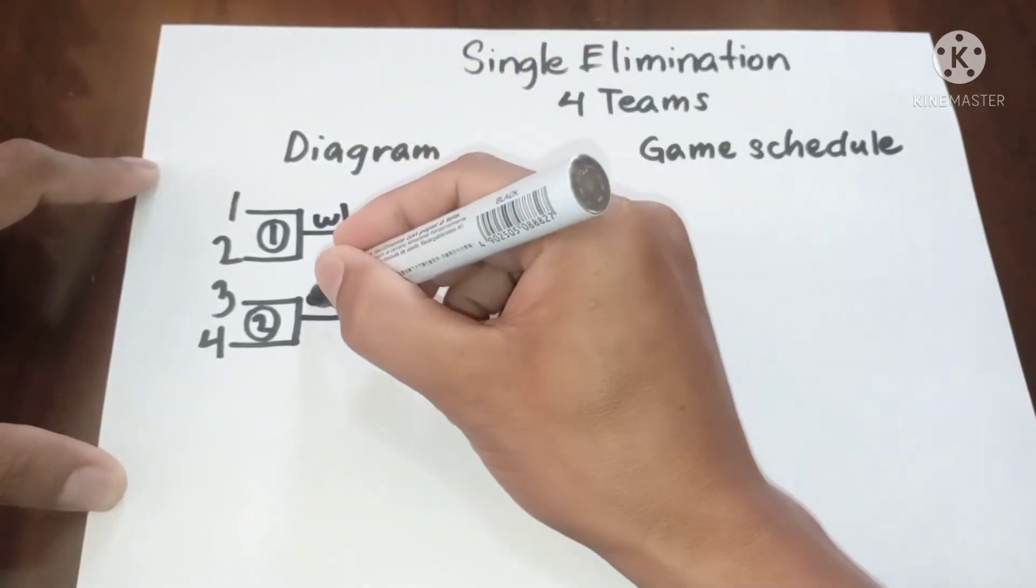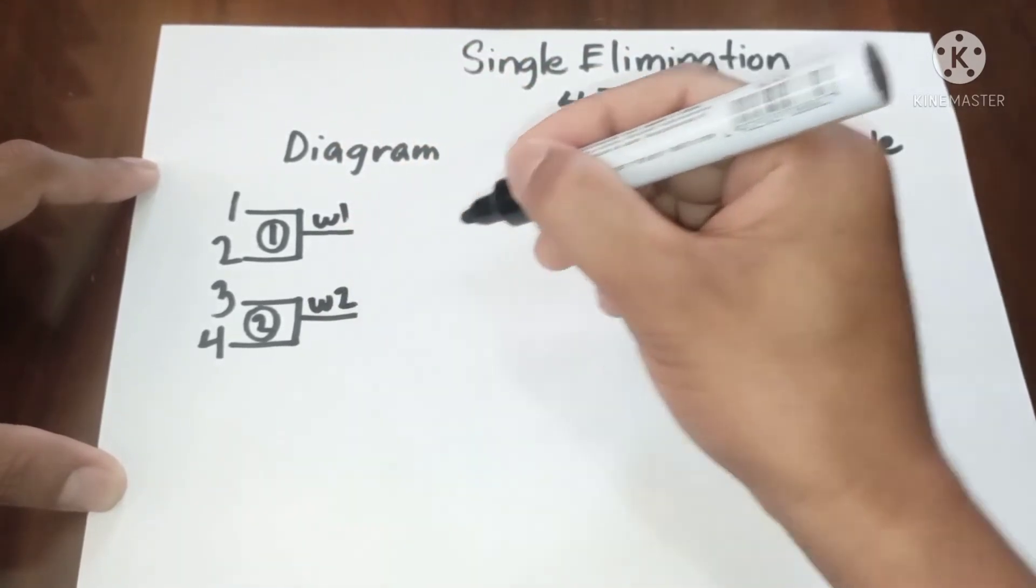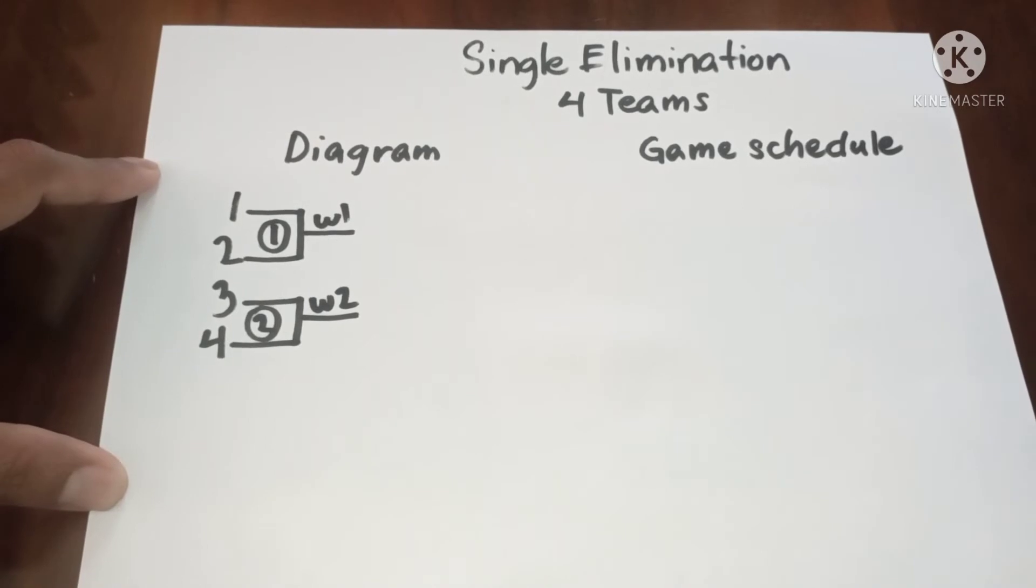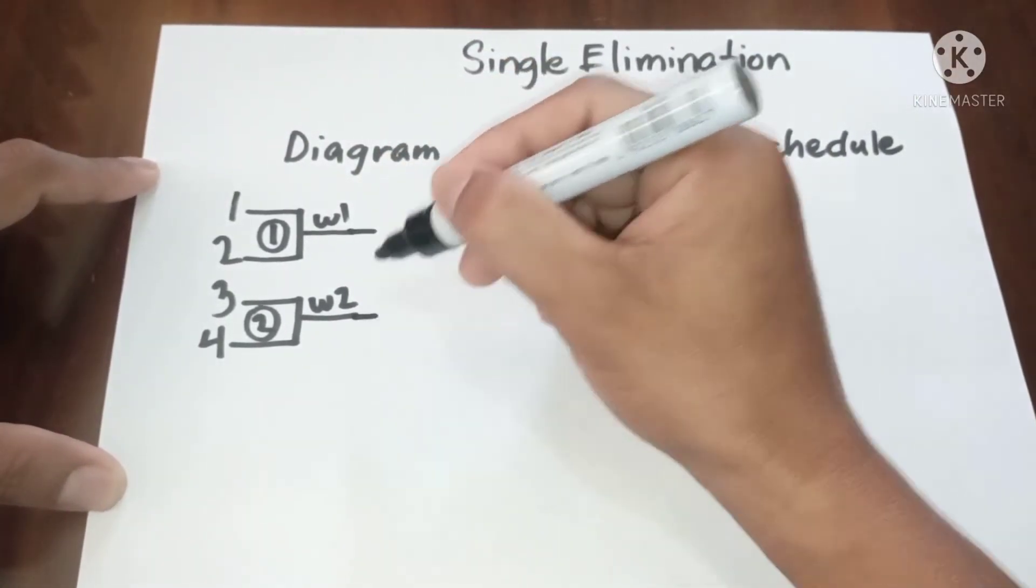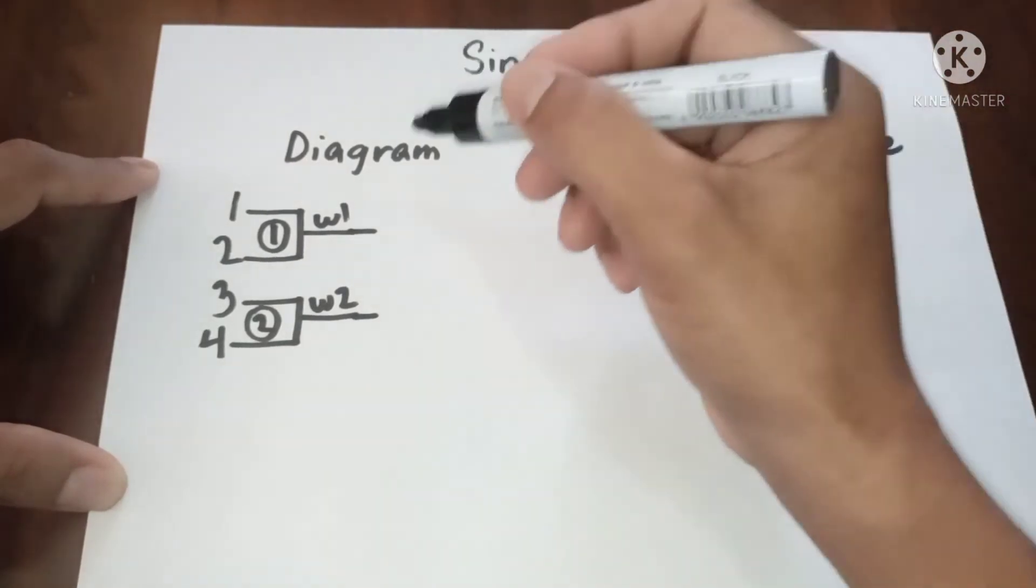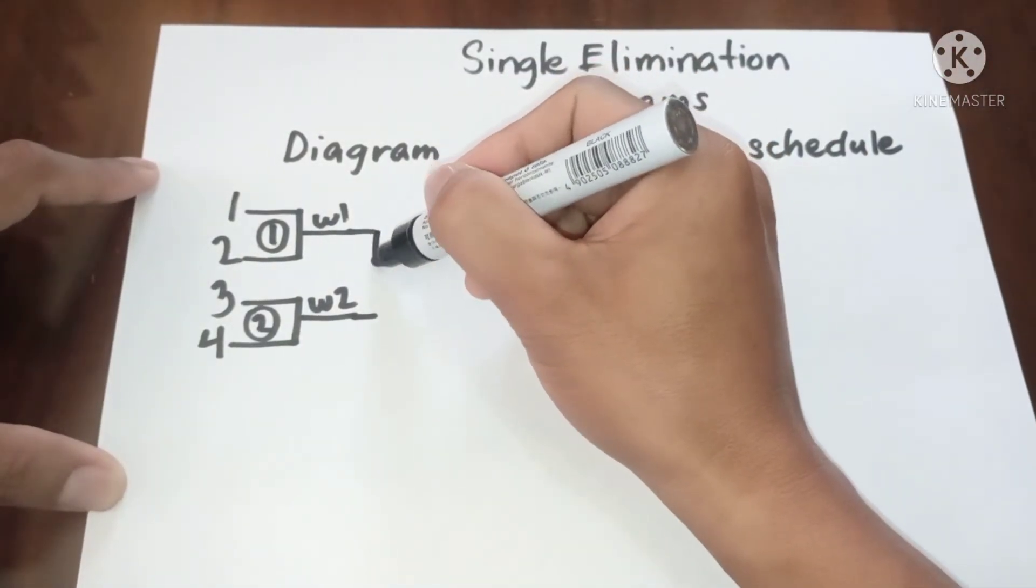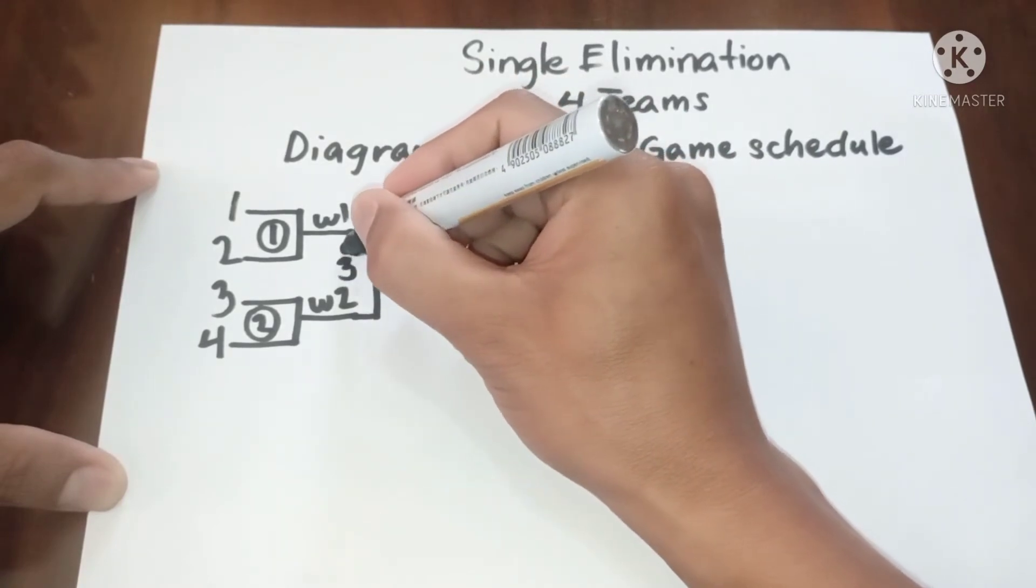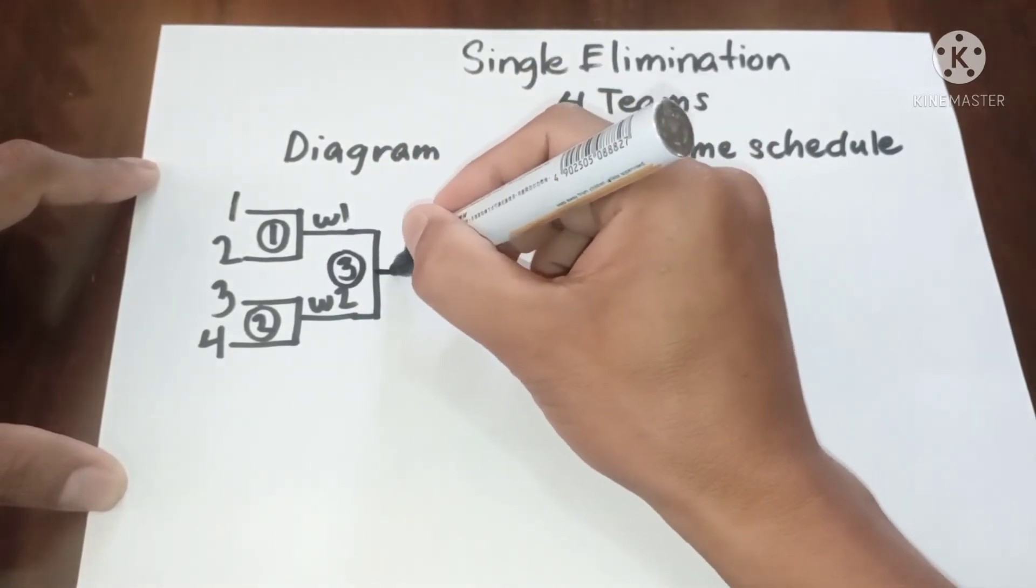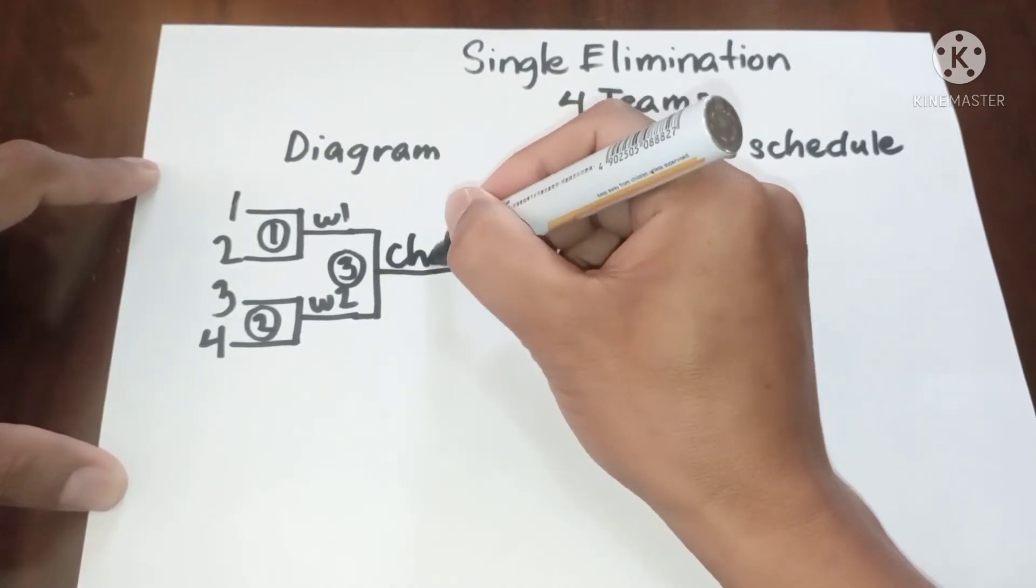Winner one, winner two. So we only have one game remaining, so winner one versus winner two in game three, then champion.